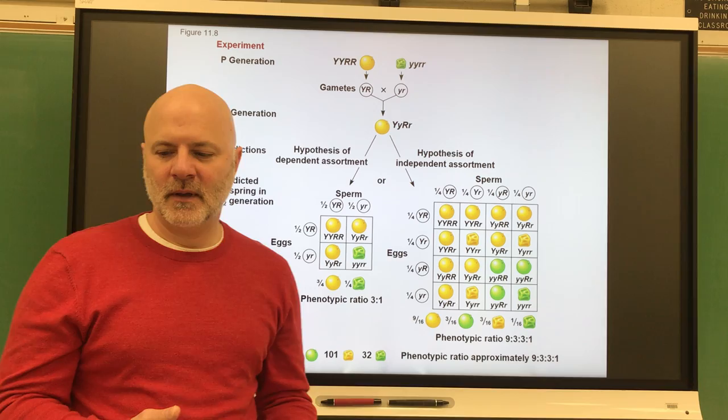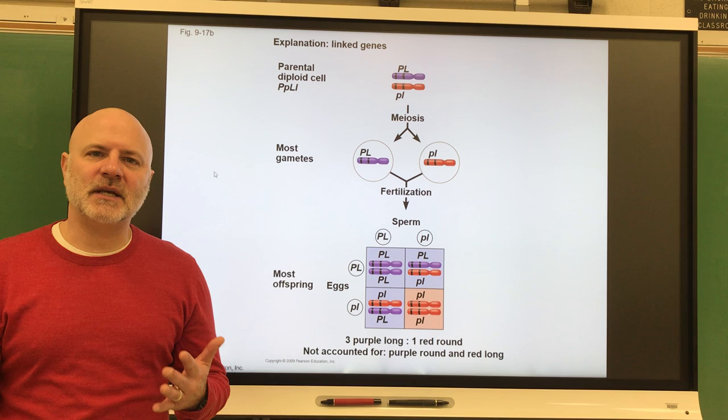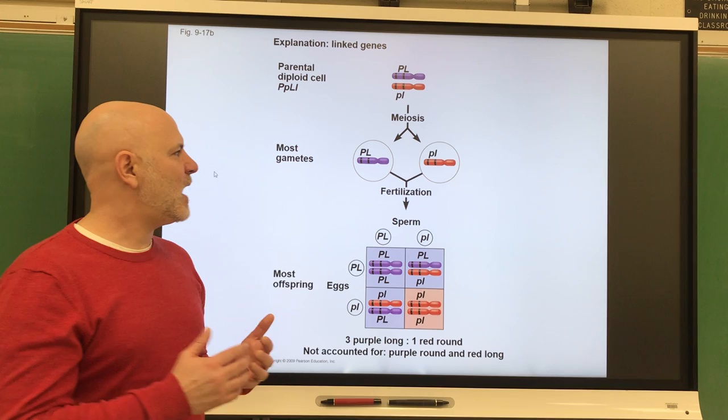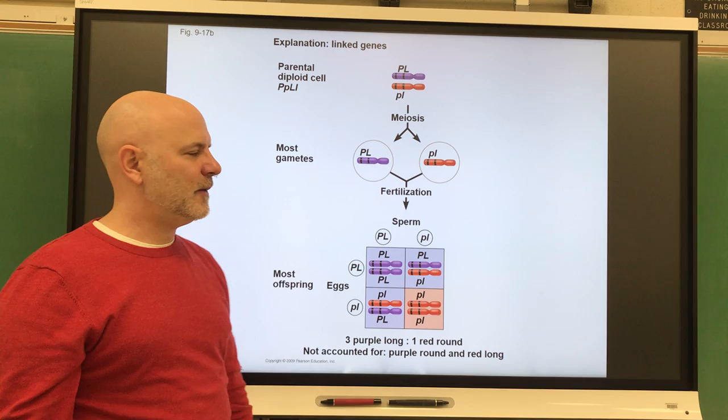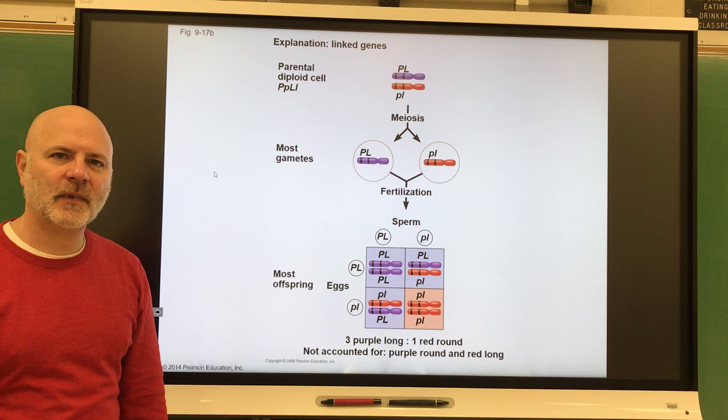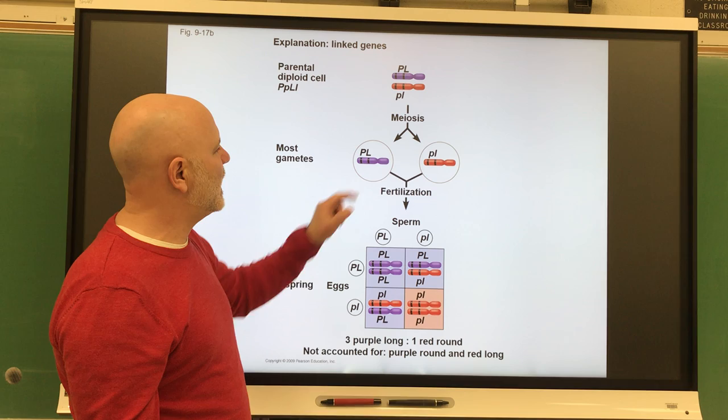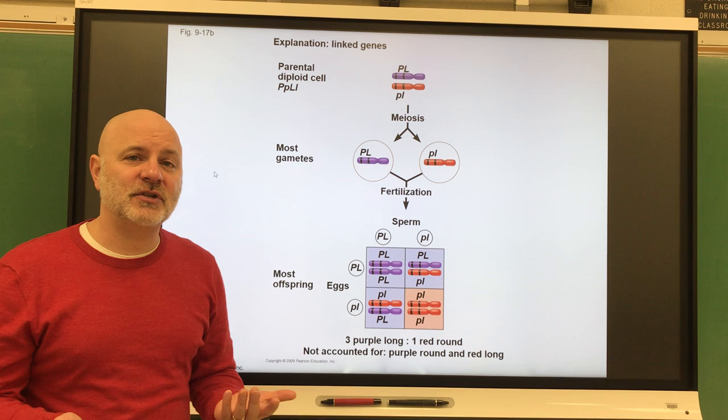One of the things that Mendel kind of got lucky on is that these traits of his were not linked. What I mean by linked is that linked genes are genes that are on the same chromosome. And because they're found on the same chromosome, they are inherited together. So if you get the big P, you're going to get the big L. If you get the little p, you get the little l. What happens in a linked genes situation is you get this 3 to 1 ratio that occurs as opposed to that 9 to 3 to 3 to 1. That's because the big P gene and the big L gene are on the same chromosome. They're inherited together. So if you get one, you get the other.